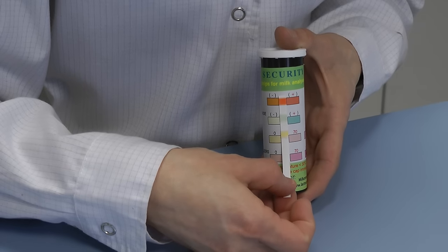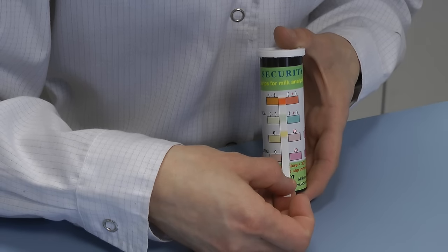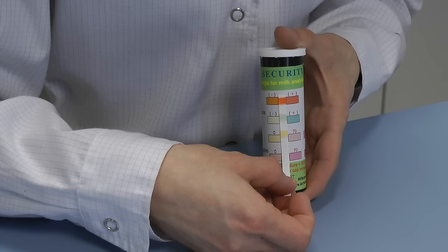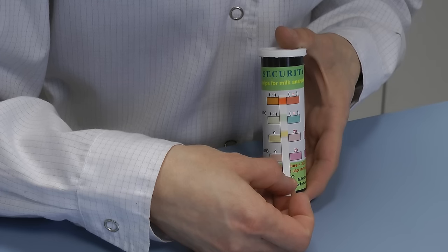When there is adulteration with neutralizers, the first indication area is changing its color from orange to orange-red.